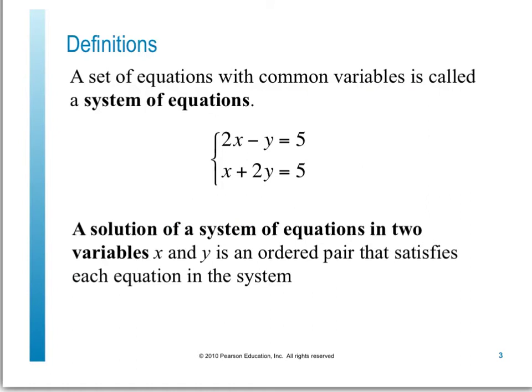What we're interested in is finding the solution to these things. A solution of a system of equations in two variables includes x and y coordinates — your ordered pairs — that satisfy each equation in the system. It has to be an x and y coordinate that, when substituted into both equations, satisfies each one. Let's look at an example of verifying a solution.